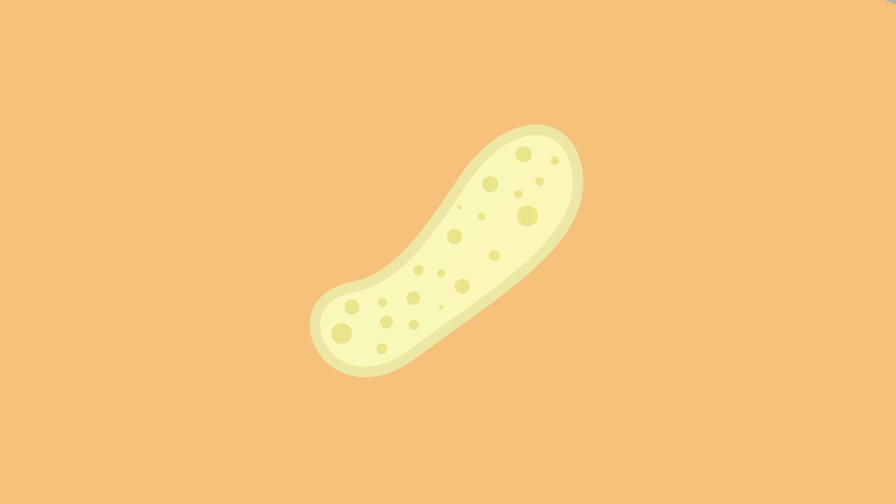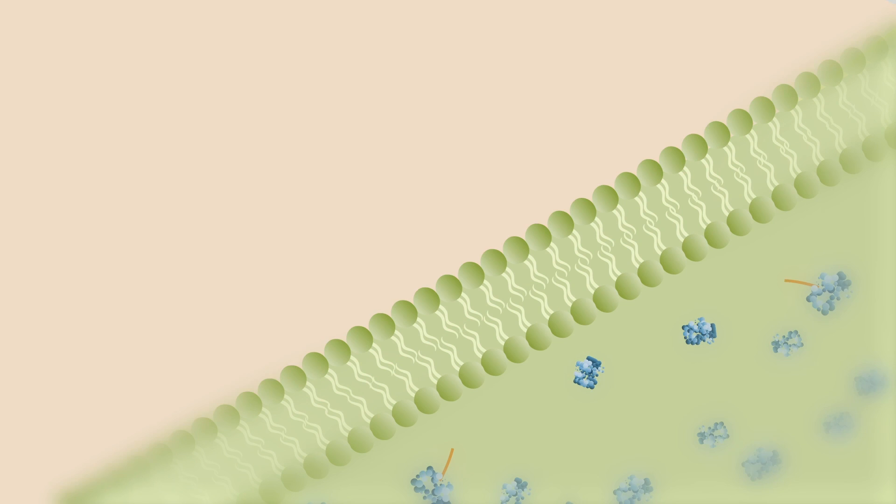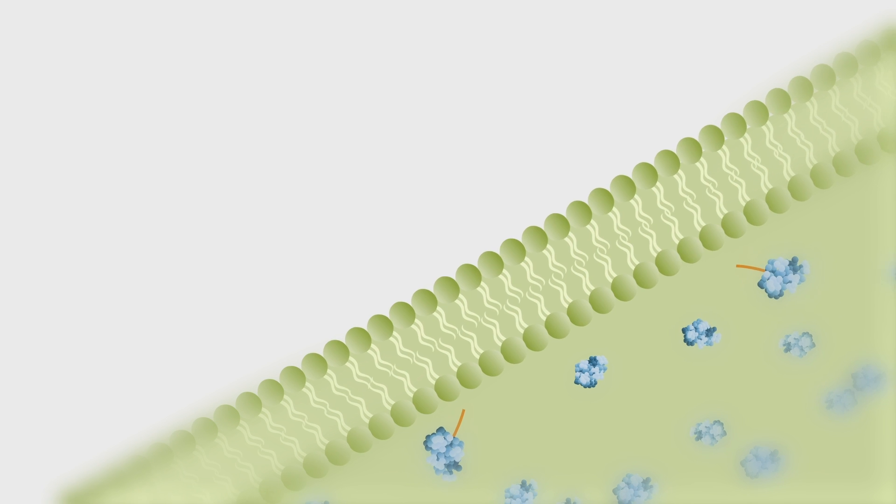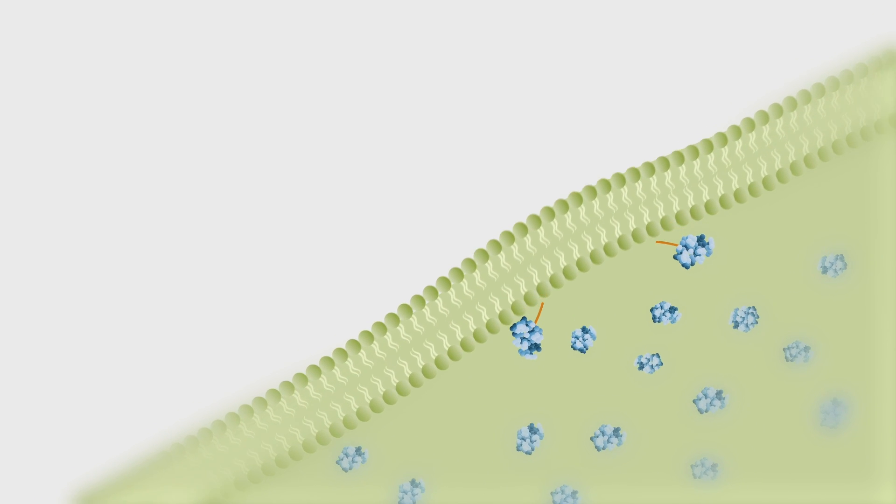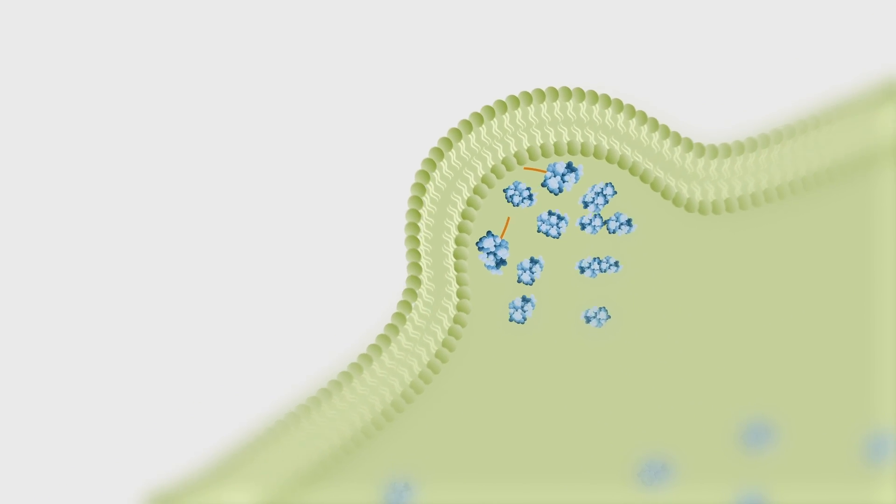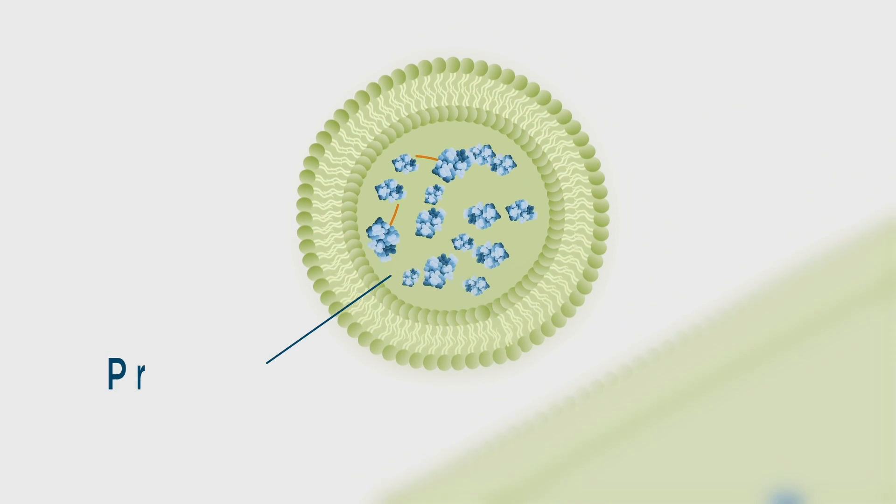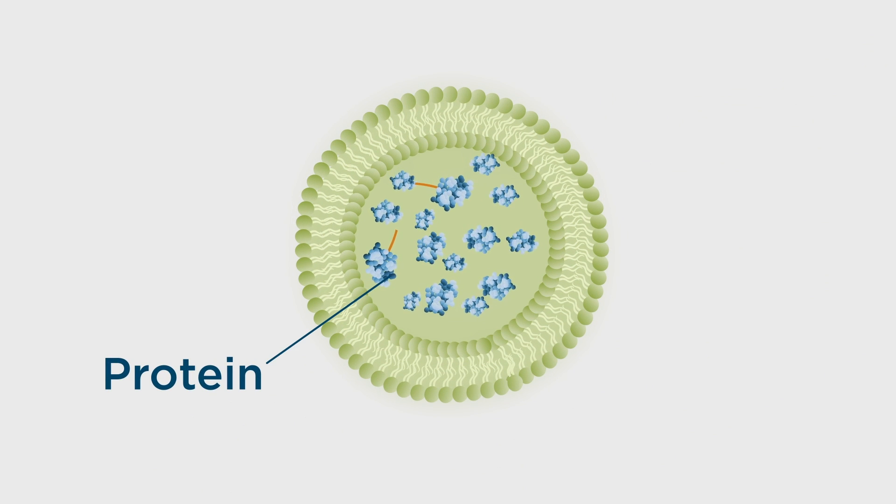The Kent researchers discovered that adding a specific small extension to the end of a protein results in its incorporation within membrane-bound packages, or vesicles, which are subsequently exported from cells. These protein-filled vesicles can be easily purified and then stored for months in a fridge.